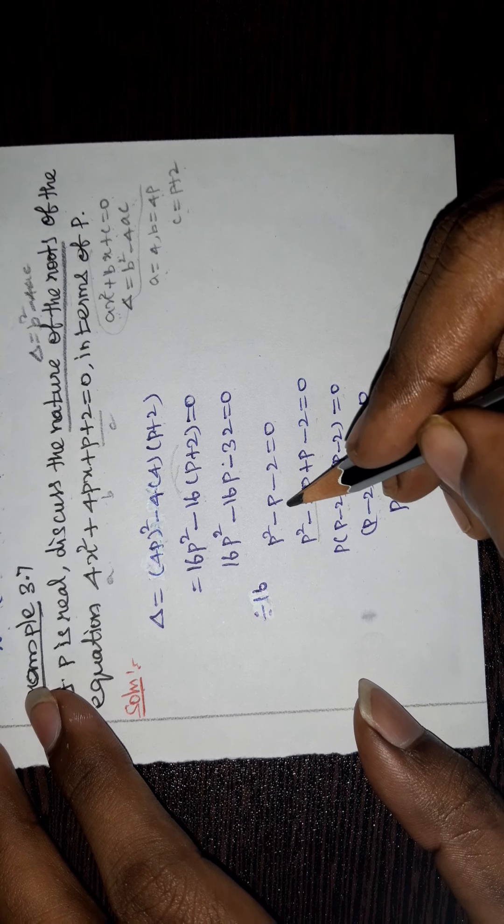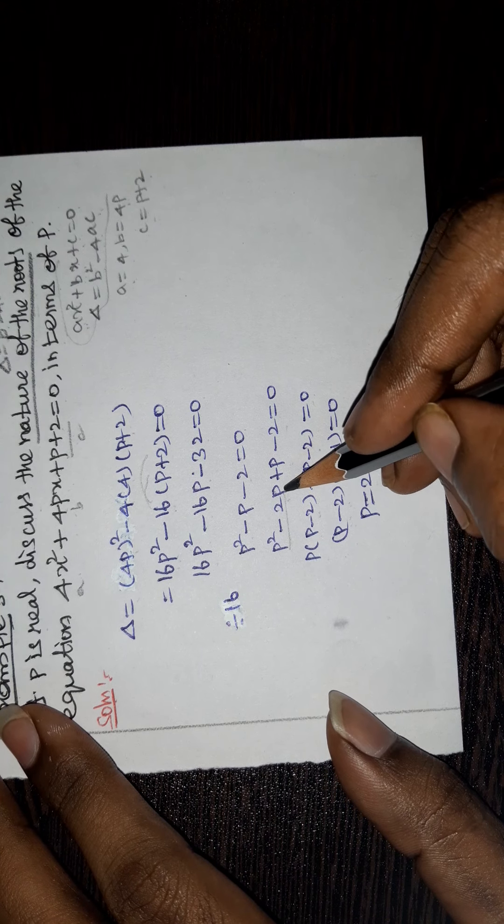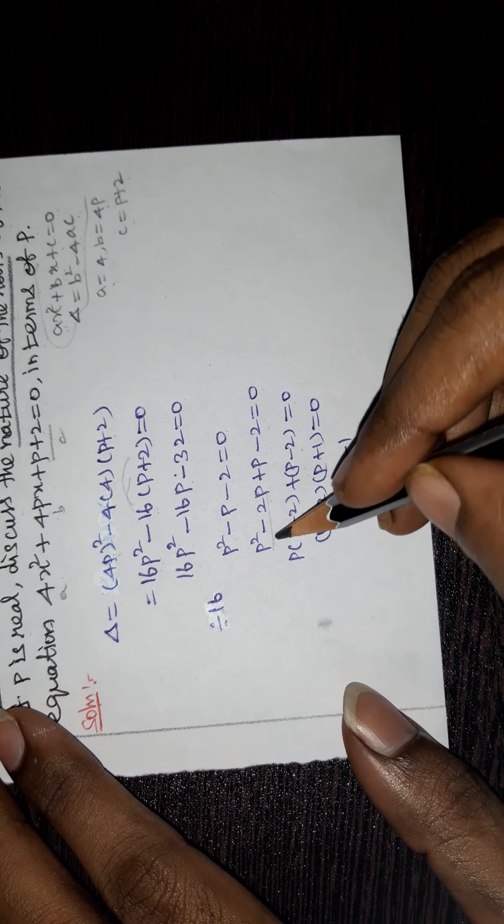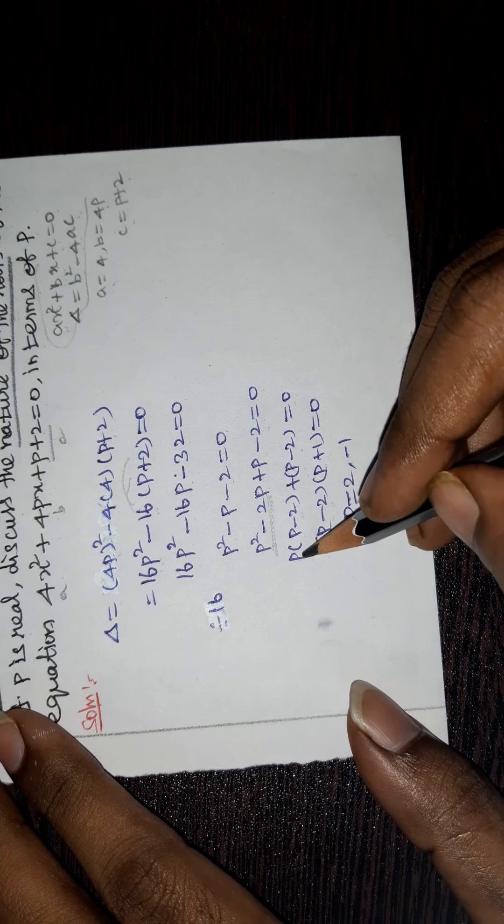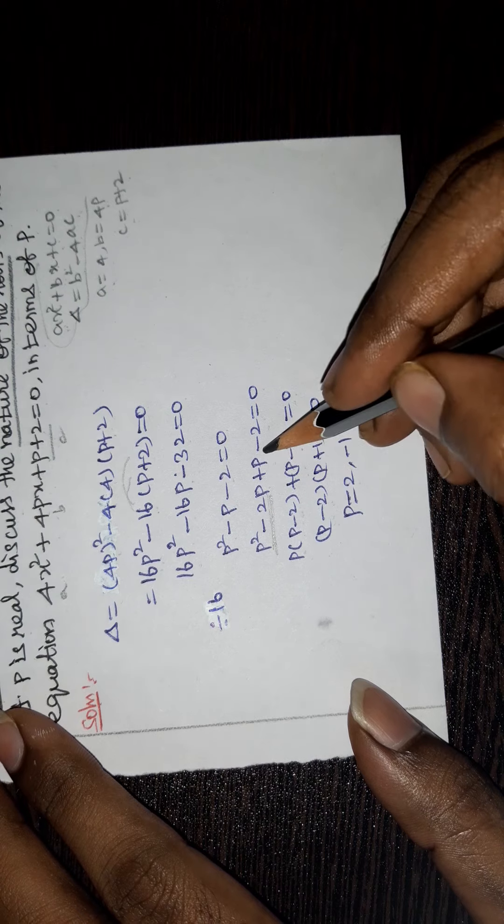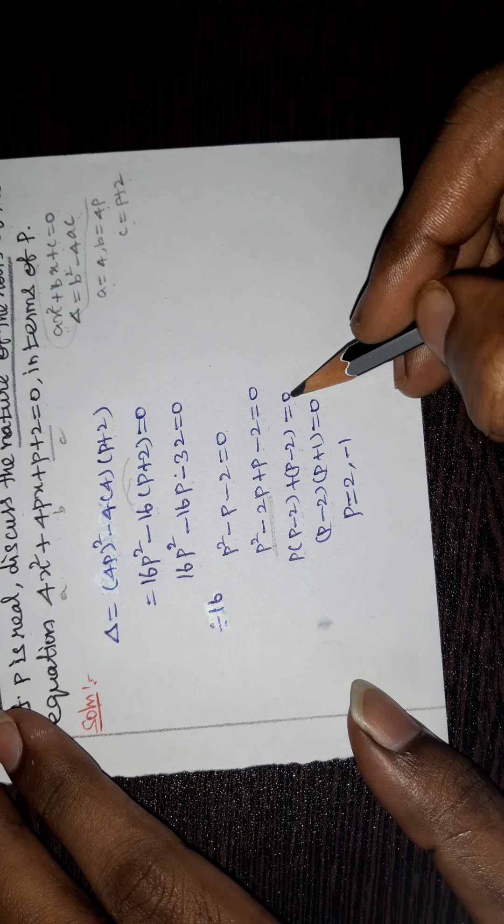Splitting the middle term: p² - 2p + p - 2 = 0. Taking p common from the first terms: p(p - 2) + 1(p - 2) = 0.